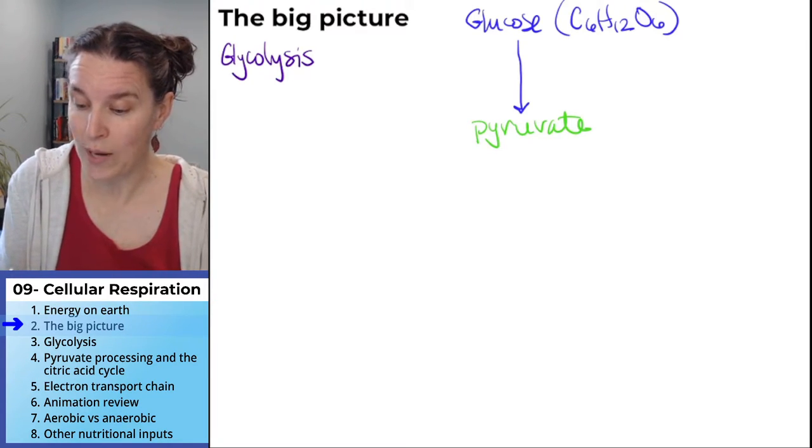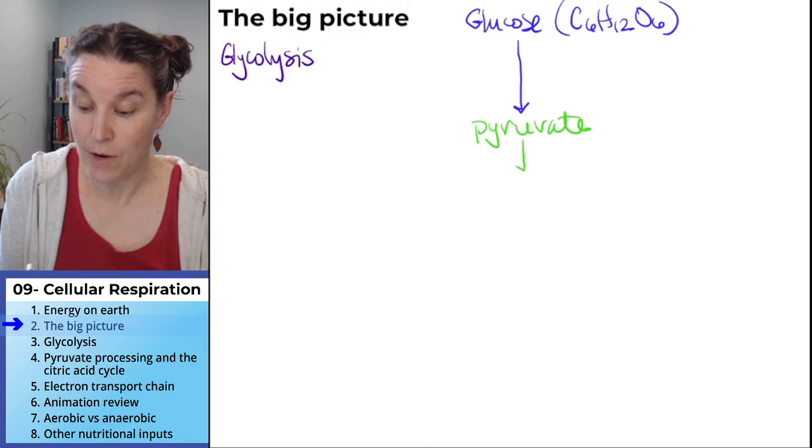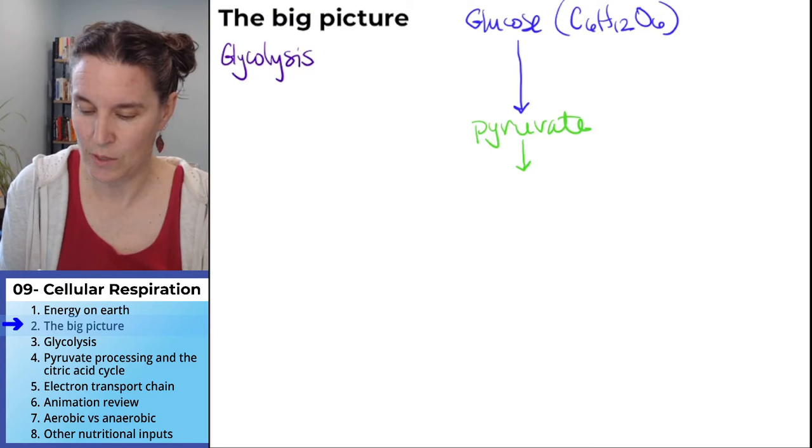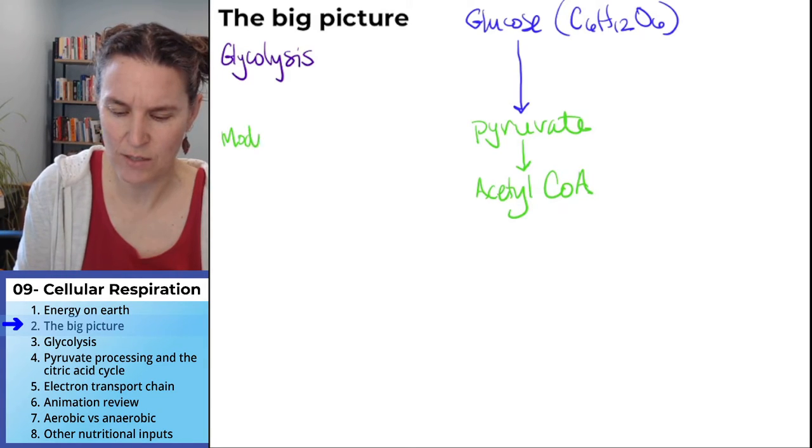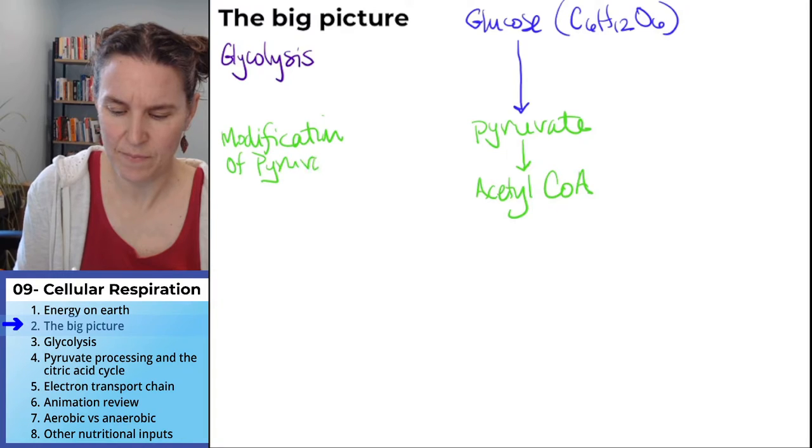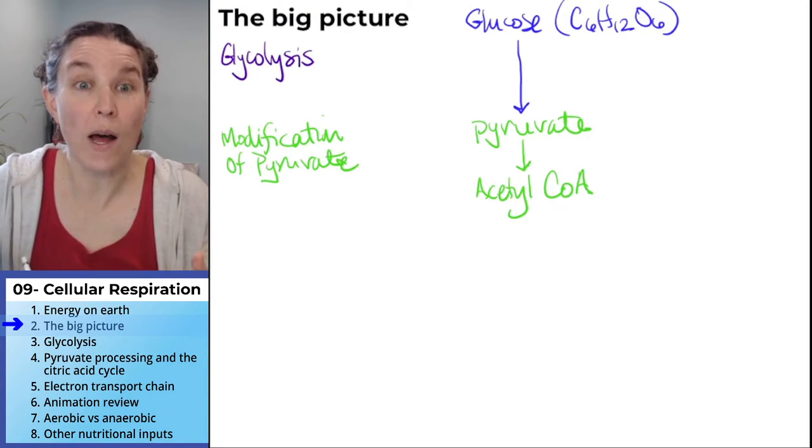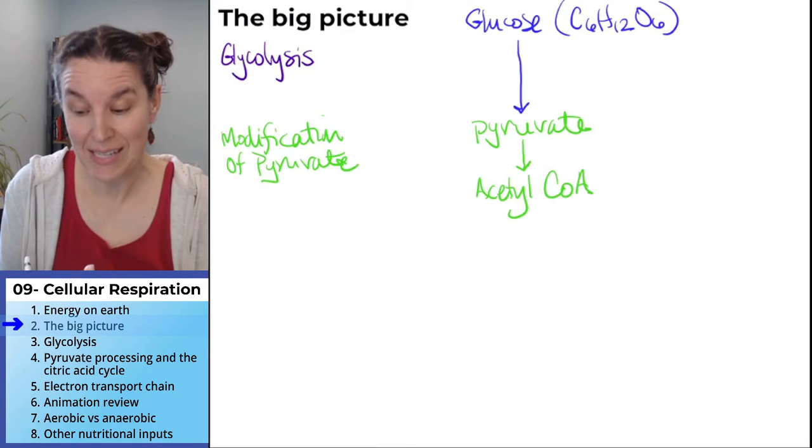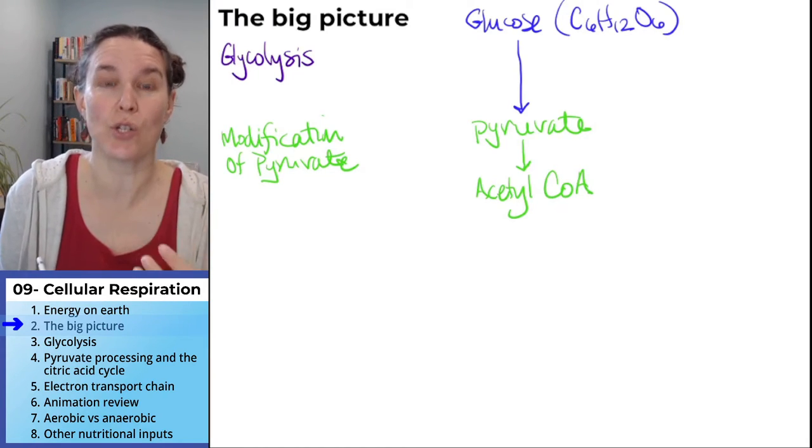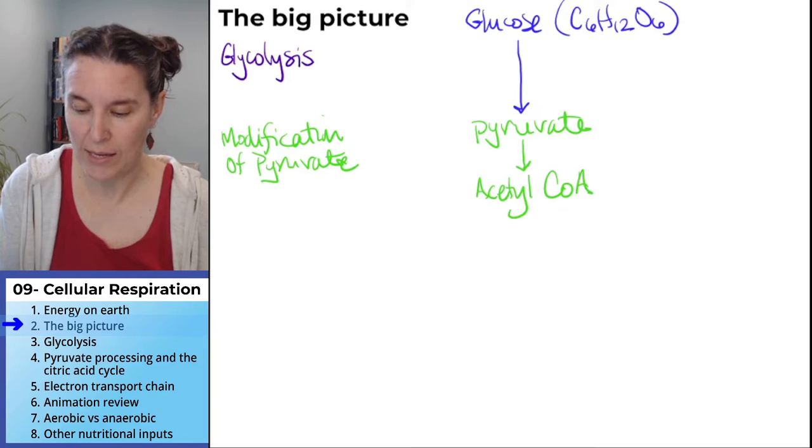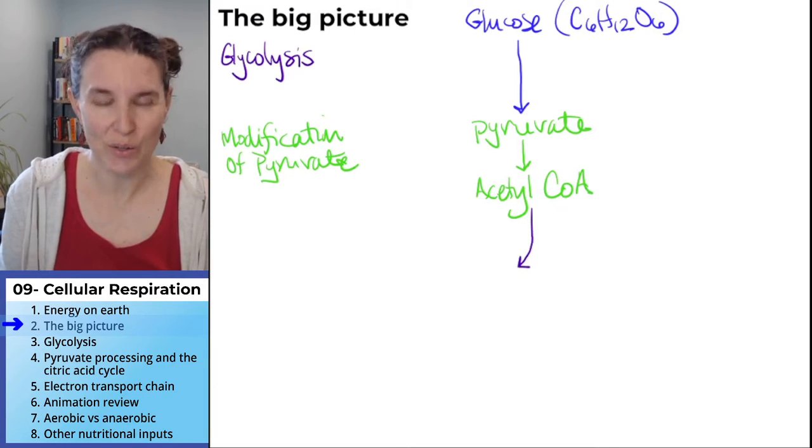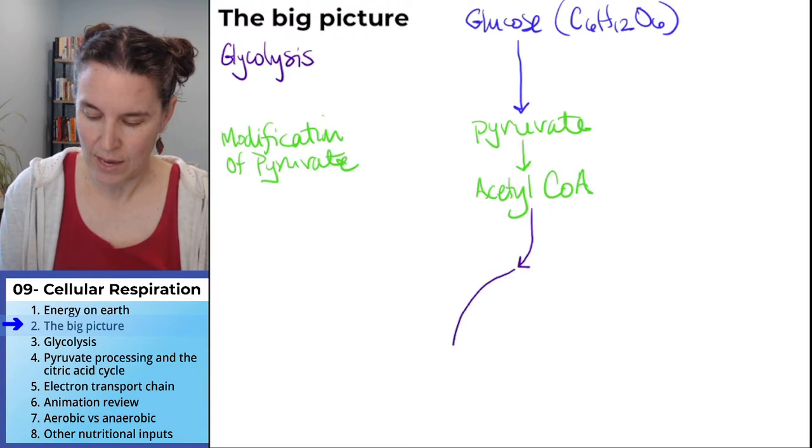Pyruvate goes through a brief, a very brief modification and gets turned into acetyl-CoA. And I'm just going to go ahead and name that the modification of pyruvate. It's like one reaction, but it does take that pyruvate and change it into acetyl-CoA. And then the acetyl-CoA is the molecule that directly enters this cycle called the citric acid cycle.